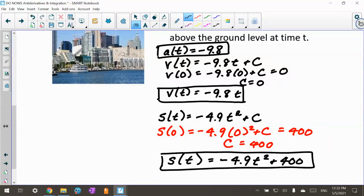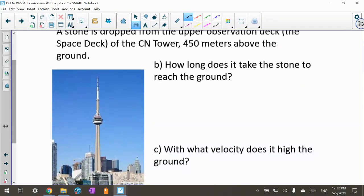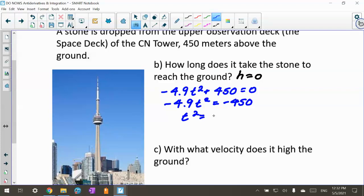Now we can start with that position function. I want to know how long it takes the stone to reach the ground. If it reaches the ground, my height is 0. So I'm going to take that equation, negative 4.9t squared plus 450, and put it equal to 0. Solving this, I get t squared equals 91.8367. When I take the square root, there is a plus and minus, but the minus doesn't apply because we're talking about time. So our time is 9.58 seconds for that stone to hit the ground.